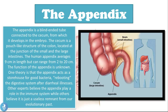The appendix is a blind-ended tube connected to the cecum, from which it develops in the embryo. The cecum is a pouch-like structure of the colon located at the junction of the small and large intestines. The human appendix averages about nine centimeters in length but can range anywhere from two to twenty centimeters. The function of the appendix is unknown — one theory is that it acts as a storehouse for good bacteria, rebooting our digestive system after diarrheal illnesses. Other experts believe the appendix plays a role in the immune system, while others believe it is just a useless remnant from our evolutionary past.